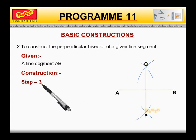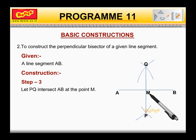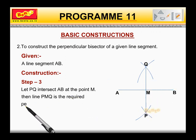Step 3. Let PQ intersect AB at the point M. Step 4. Then line PMQ is the required perpendicular bisector of AB.